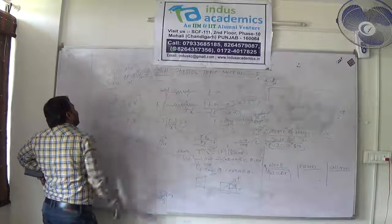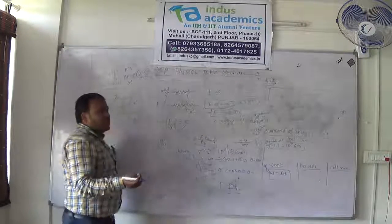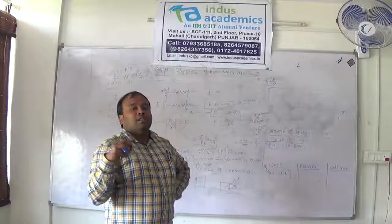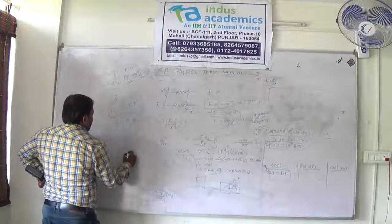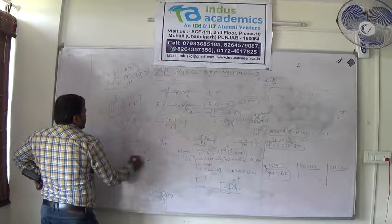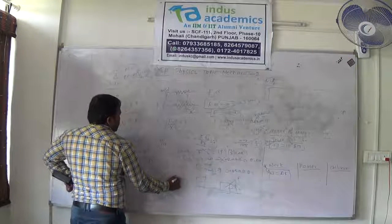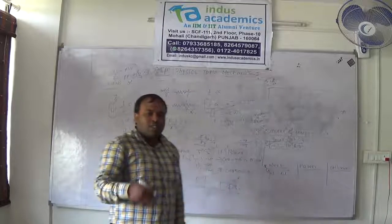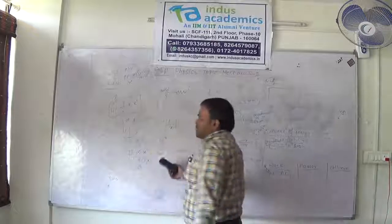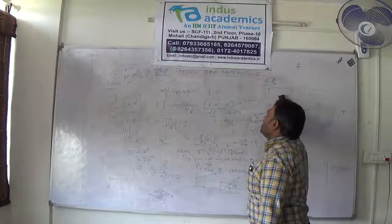If the spring is stretched by x and energy is U, and then stretched by 2x, since U ∝ x², the new energy U' = 4U — energy becomes four times. These comparative ratio-type questions are generally asked in UPSC. They will not ask much calculation, but one-step ratio-type questions can definitely appear in the paper.